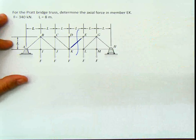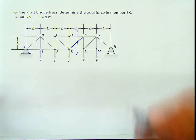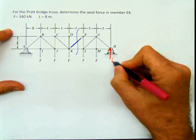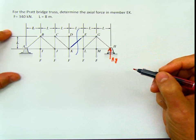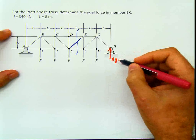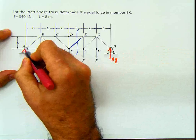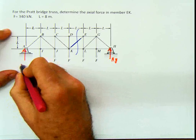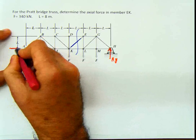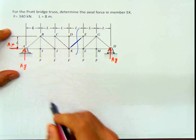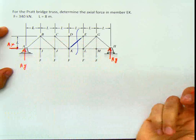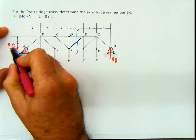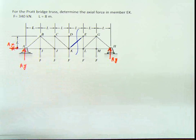What reactions will there be? Well, this is a roller, so it's going to have one reaction perpendicular to the support surface — that's HY. And on the other side, we're going to have AY and AX. But by simple inspection, because there's no other horizontal force, when you do summation of forces in X, AX is going to be 0, so you can just omit that force.